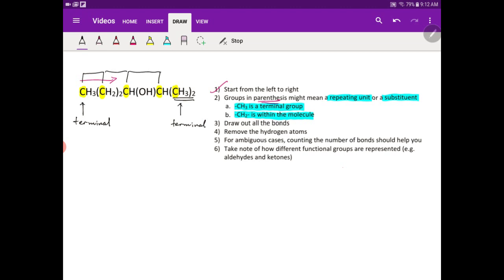So if I start first, I know that I have one carbon here, two carbons here, fourth carbon, fifth carbon. So my main chain should have five carbons. So let me count: one, two, three, four, and five.